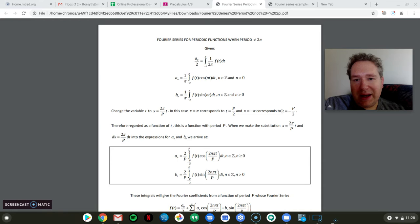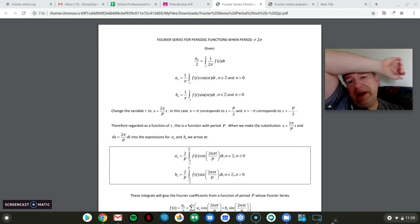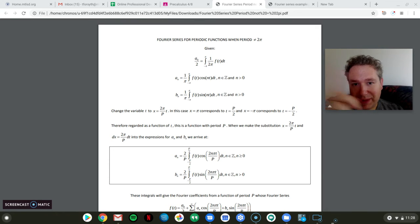And then, of course, if you do the same thing with negative π, you get negative P over 2. And so then what that means is basically that if you look at this as a function of t again, the period would become basically P because you're going from capital P over 2 to negative capital P over 2. That's a length of capital P, that distance.